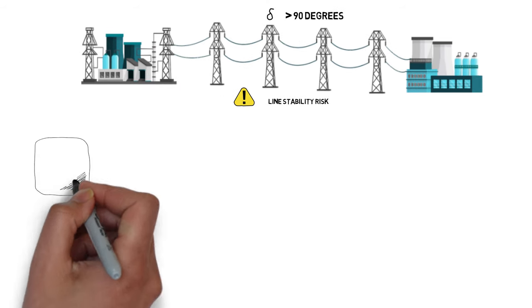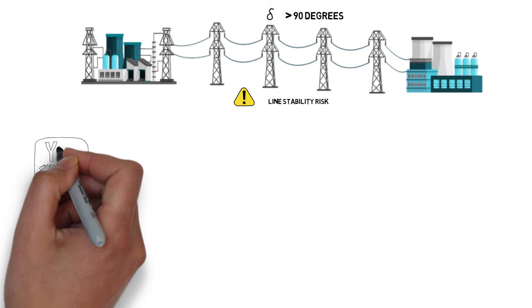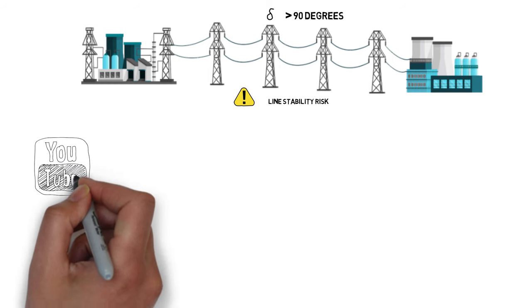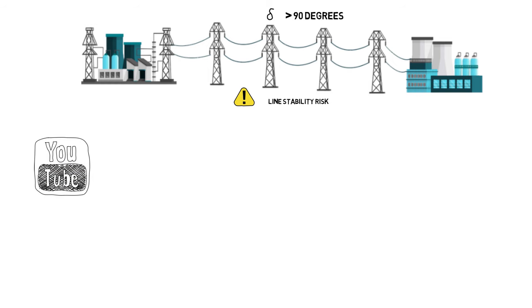In a previous video for lossless lines I calculated the sending end voltage along with surge impedance and beta. They will be required here for these calculations.